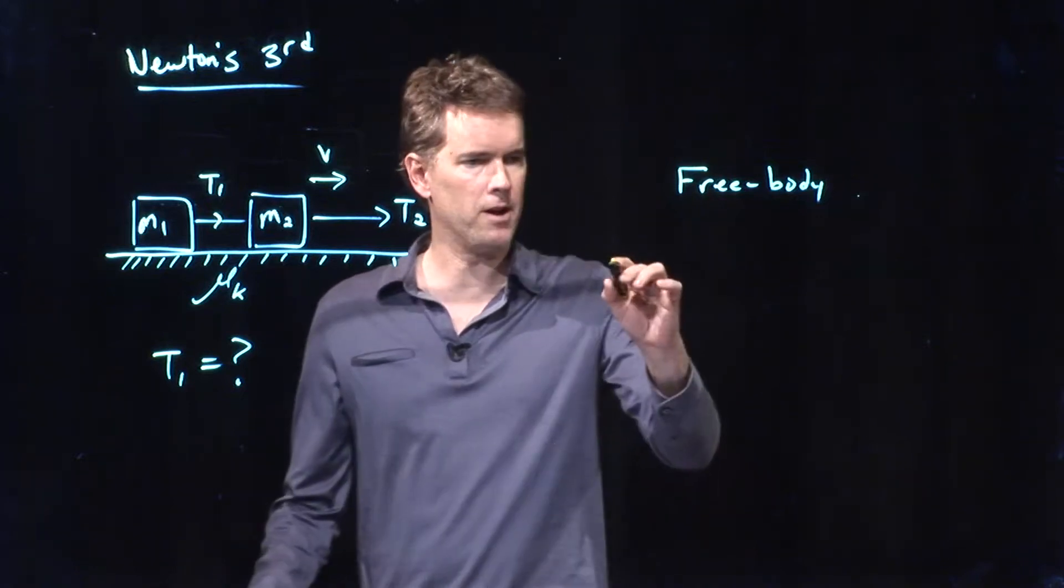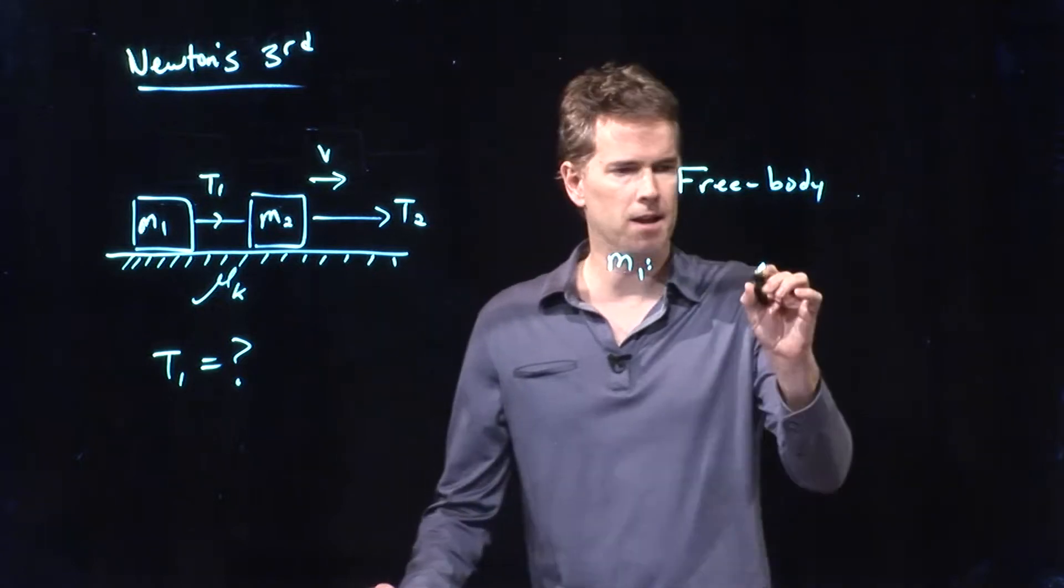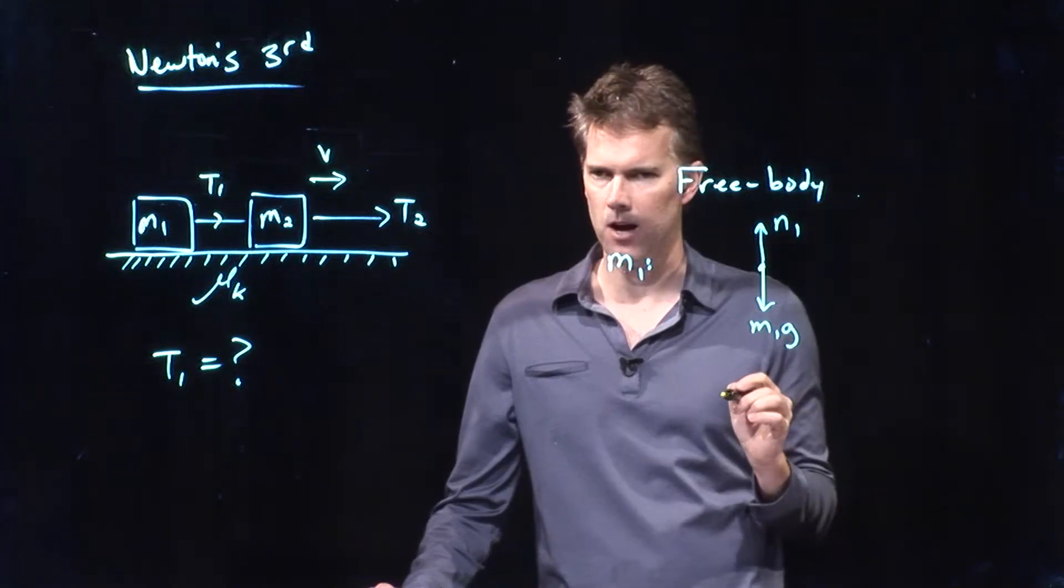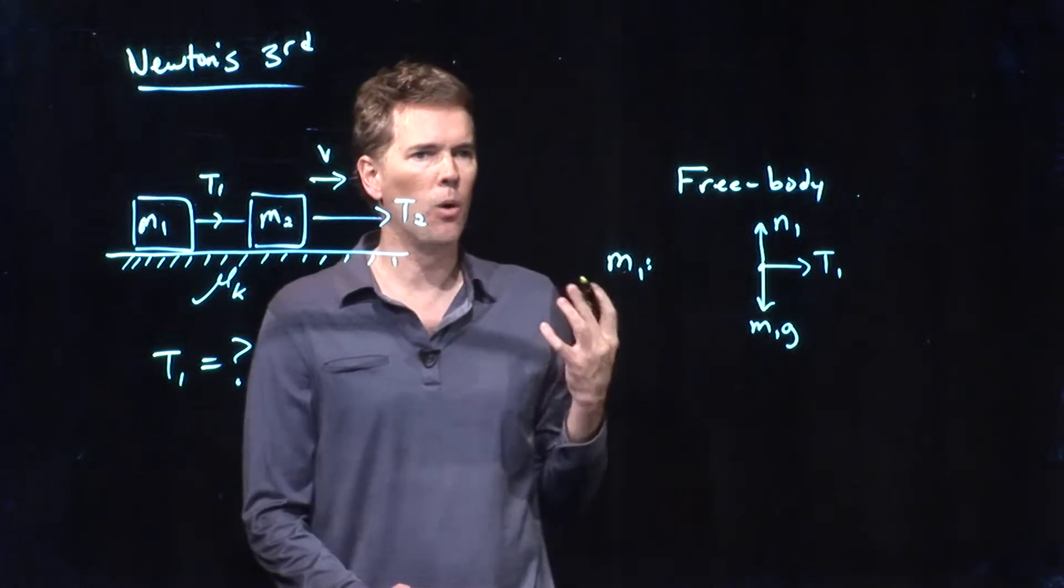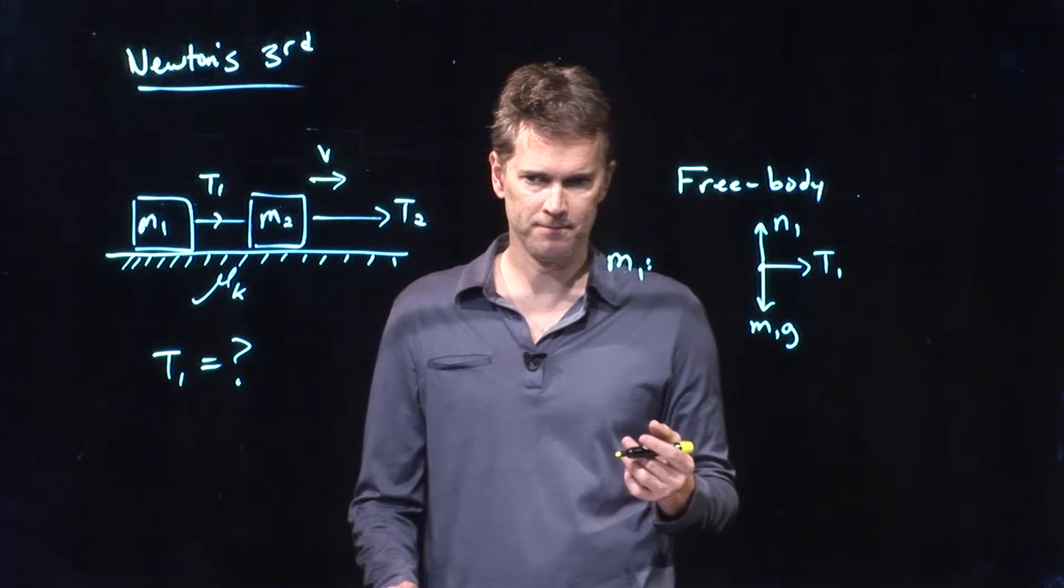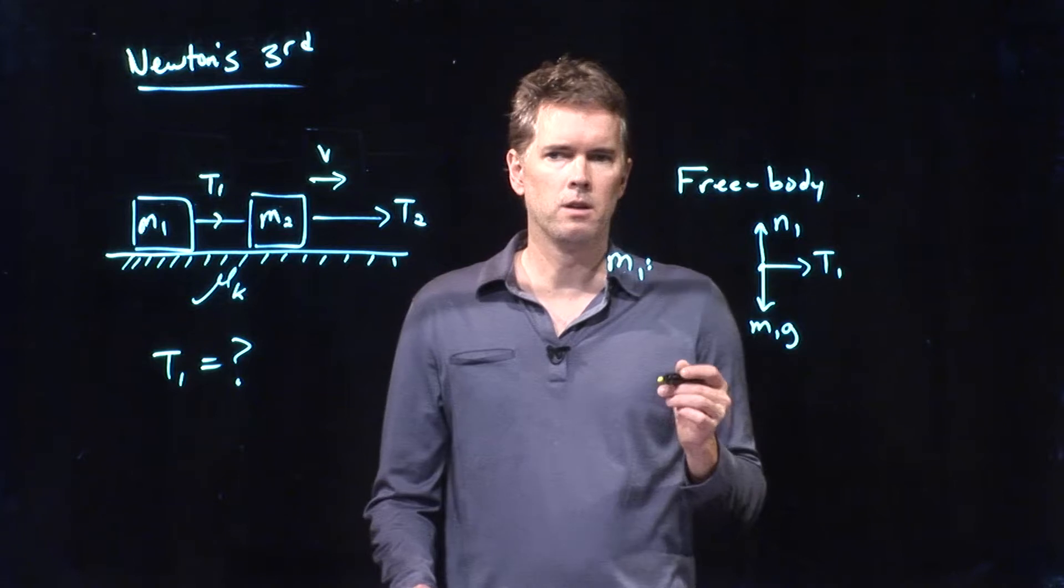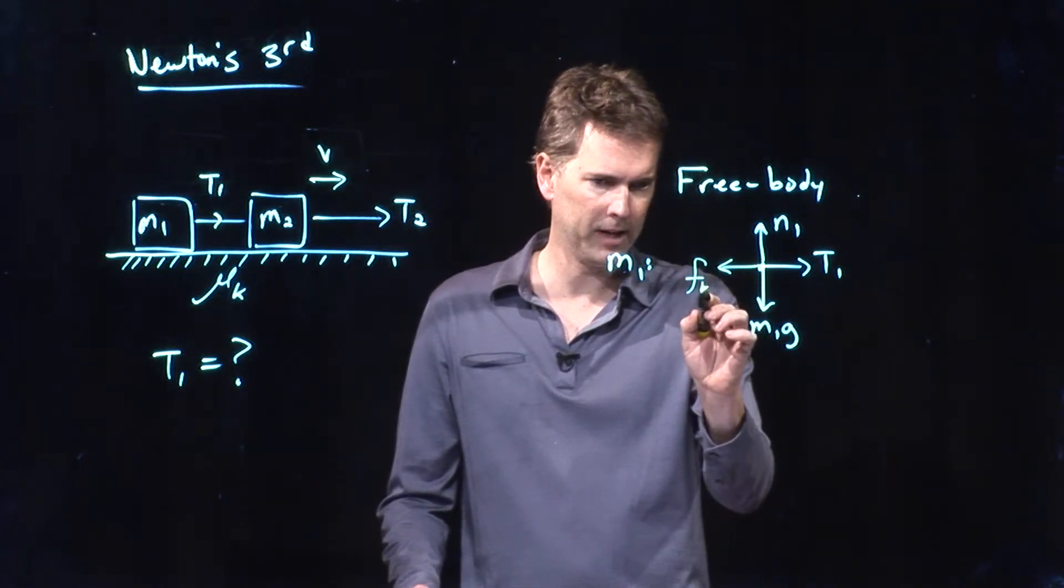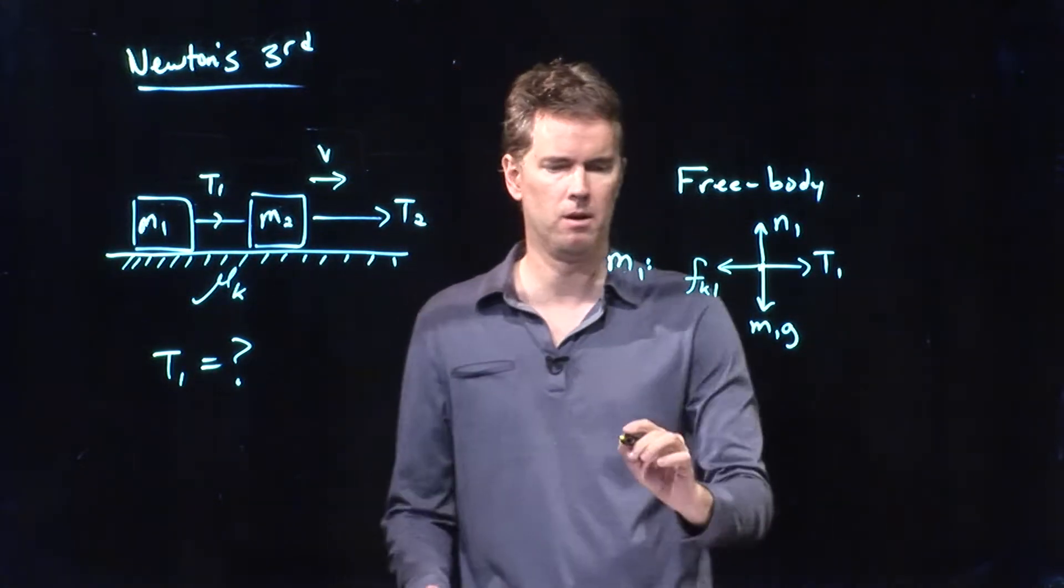The free body for M1 looks like this. We've got M1G acting down. We've got N1 acting up. We have tension 1 acting to the right. What else do we have? Brandon, what else should I put here? Kinetic friction going to the left, and we will call that FK1, kinetic friction acting on box 1. Perfect.